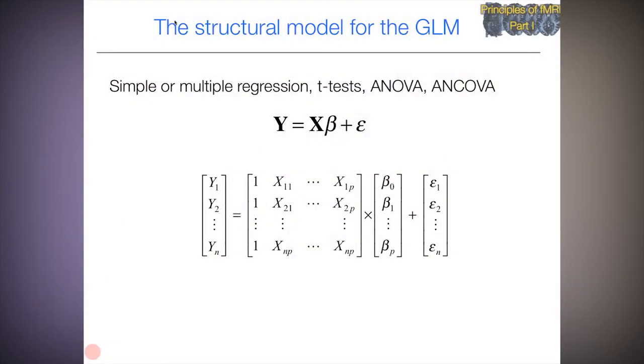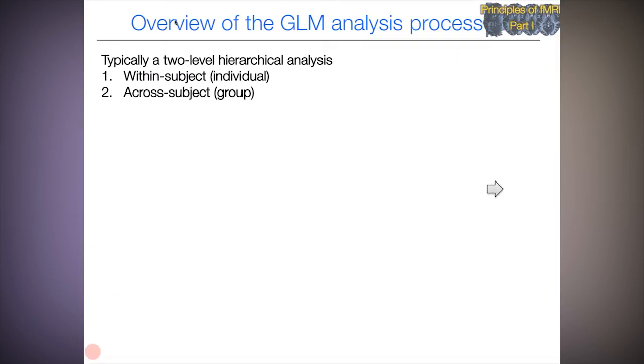First, let's review some key concepts from before. We talked about the structural model for the GLM, y equals x times beta plus error, where the betas are the model parameters that need to be estimated. x is the design matrix that we're going to specify in advance. That's what we're building today.